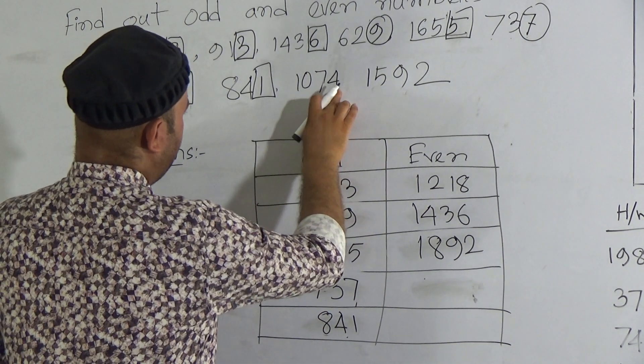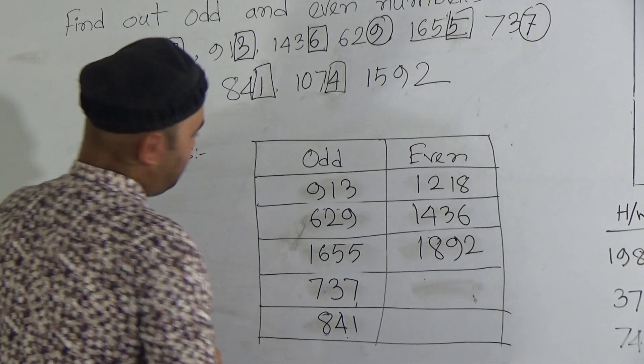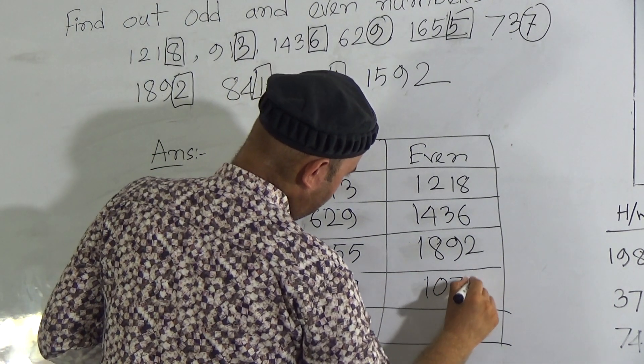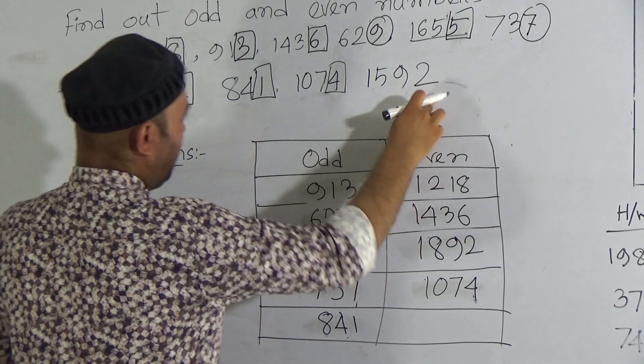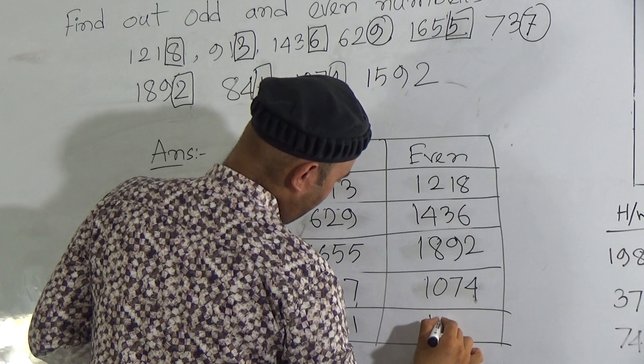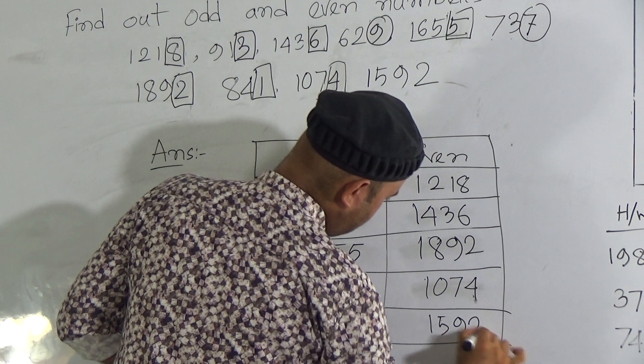Now, 1074. Here 4 is in ones place digit. That's why 1074 is also an even number. And the last one, 1592, is also an even number. Because 2 is here, ones place digit.